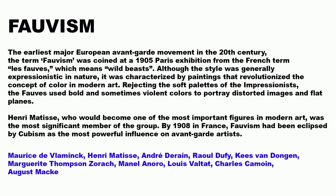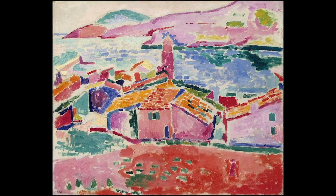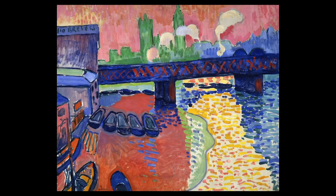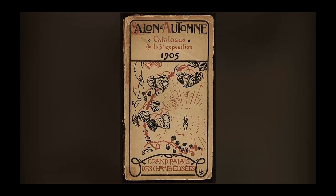Fauvism is the earliest major European avant-garde movement in the 20th century. The term Fauvism was coined at a 1905 Paris exhibition from the French term Les Fauves, which means wild beasts. Although the style was generally expressionist in nature, it was characterized by paintings that revolutionized the concept of color in modern art. Rejecting the soft palettes of the Impressionists, the Fauves used bold and sometimes violent colors to portray distorted images and flat planes. Henri Matisse was the most significant member of the group. By 1908, Fauvism had been eclipsed by Cubism.